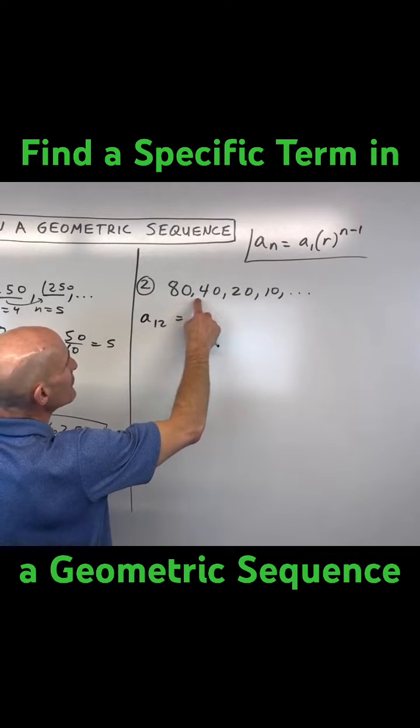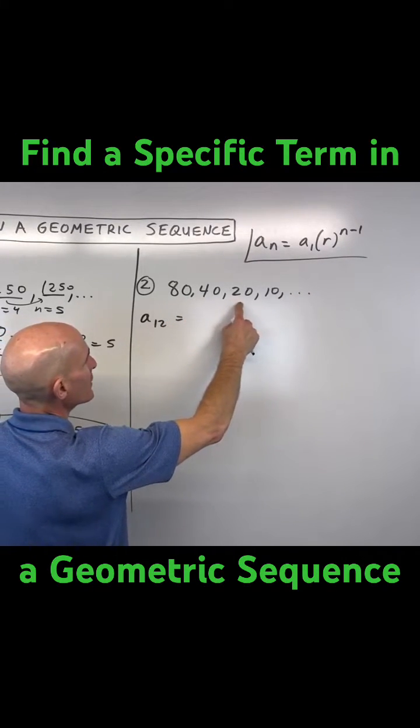Well, what's the pattern here? How are we getting from 80 to 40, or 40 to 20, or 20 to 10?